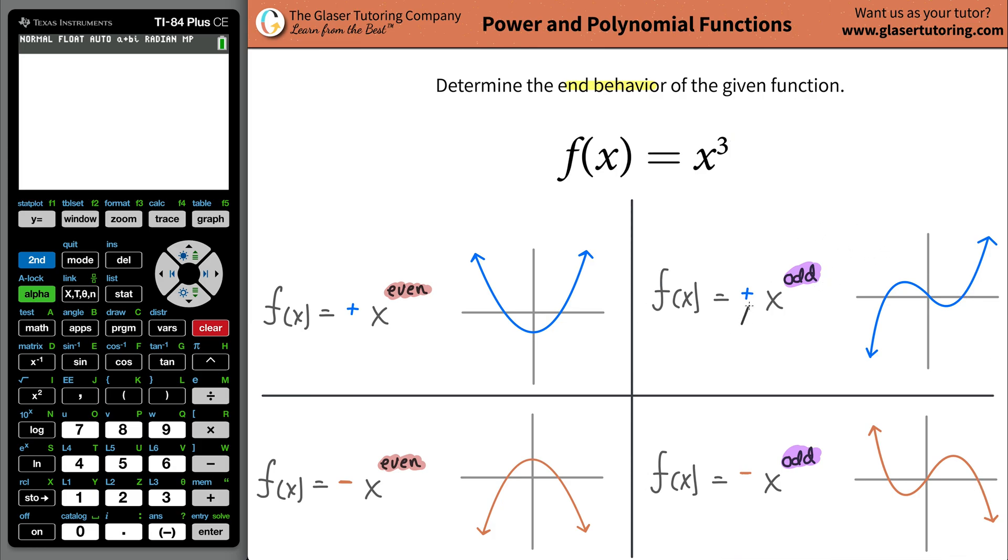Then you have to take a look at your leading coefficient's value. Is it positive or negative? If we notice, there's nothing there, so that assumes it's positive. It's really a positive one. So that leaves us with this case. This graph over here will represent the general shape.